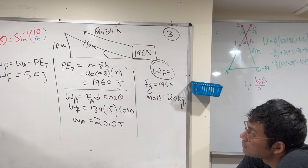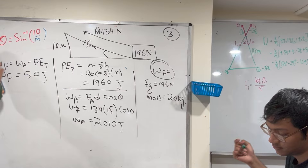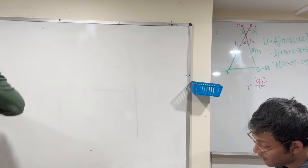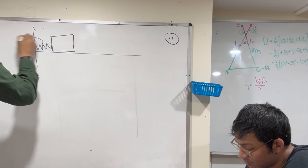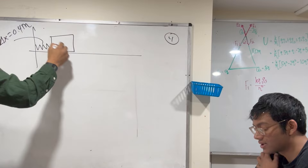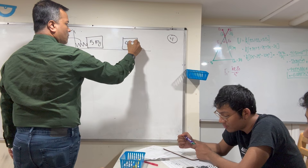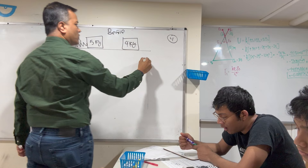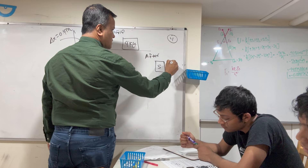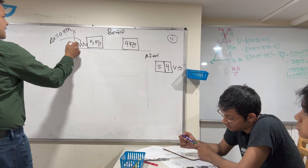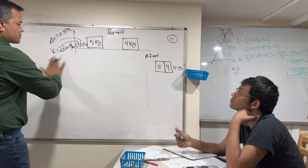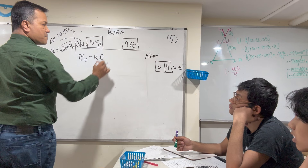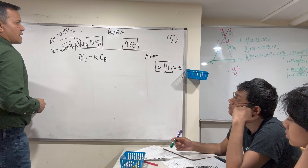Problem number four: A spring with spring constant 2000 Newtons per meter is compressed 0.4 meters. It propels a 5-kilogram block along a frictionless surface, which then collides with a stationary 4-kilogram block. The blocks stick together — find their speed. The energy stored in the spring is potential energy: k = 2000 is the spring constant, not kinetic energy yet. Spring potential energy equals kinetic energy of the block after release.